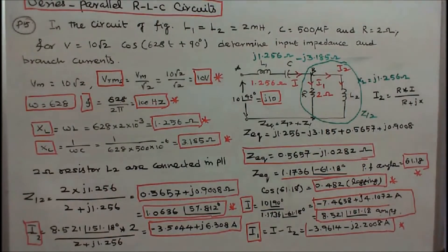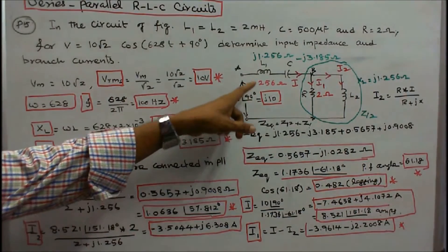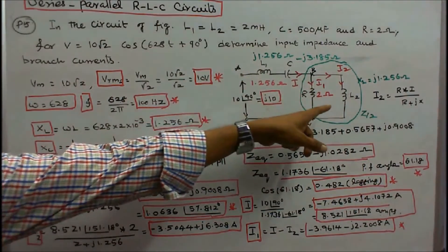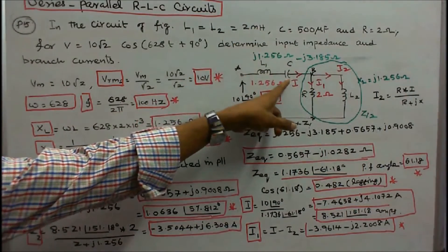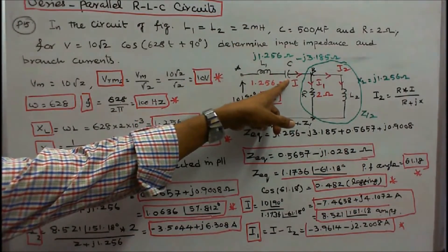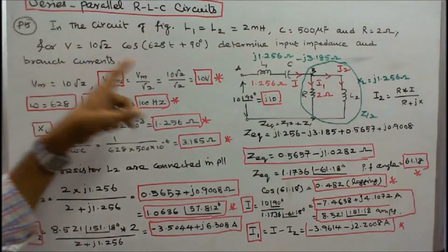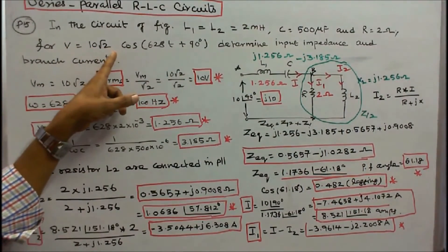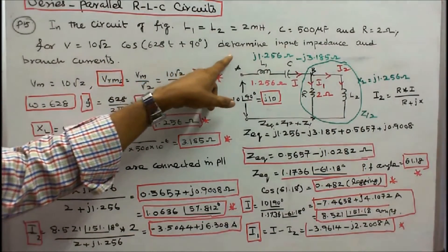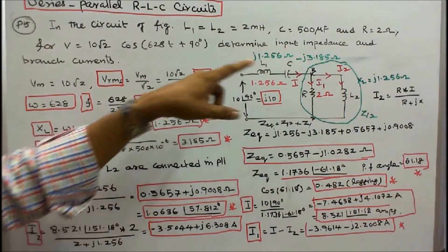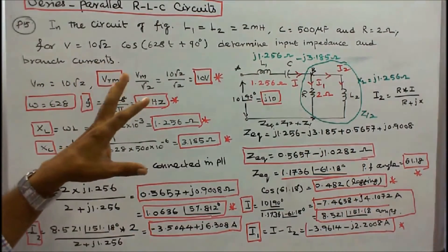Problem number 5. In the circuit of figure: L1 = L2 = 2 mH, C = 500 μF, R = 2 ohms, V = 10√2·cos(628t + 90°). Determine input impedance, branch currents, power factor angle, and power factor.